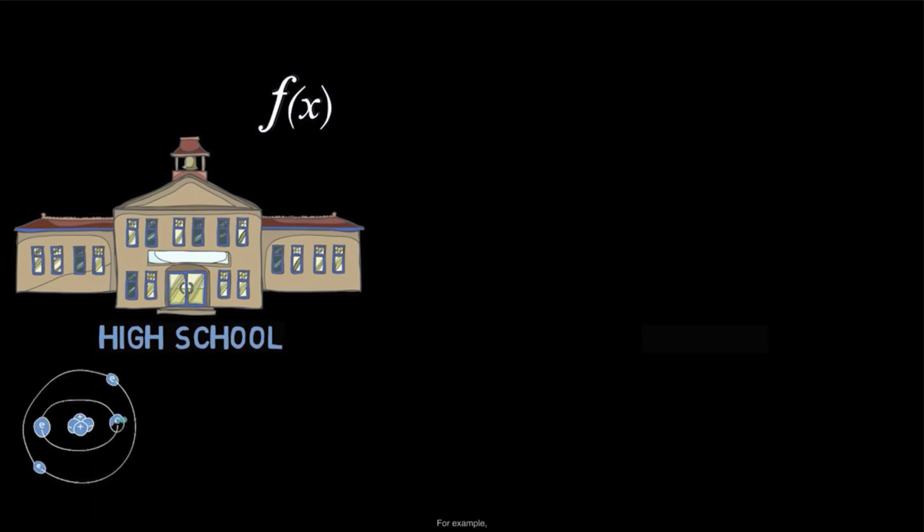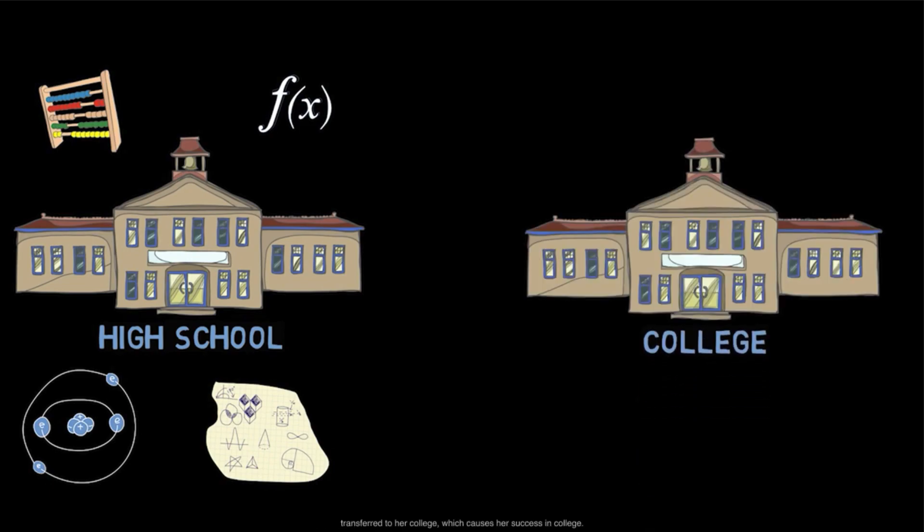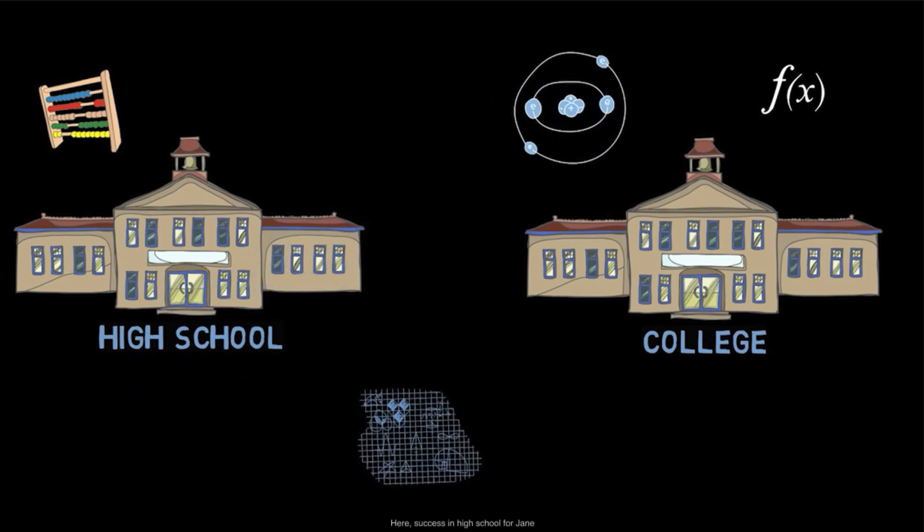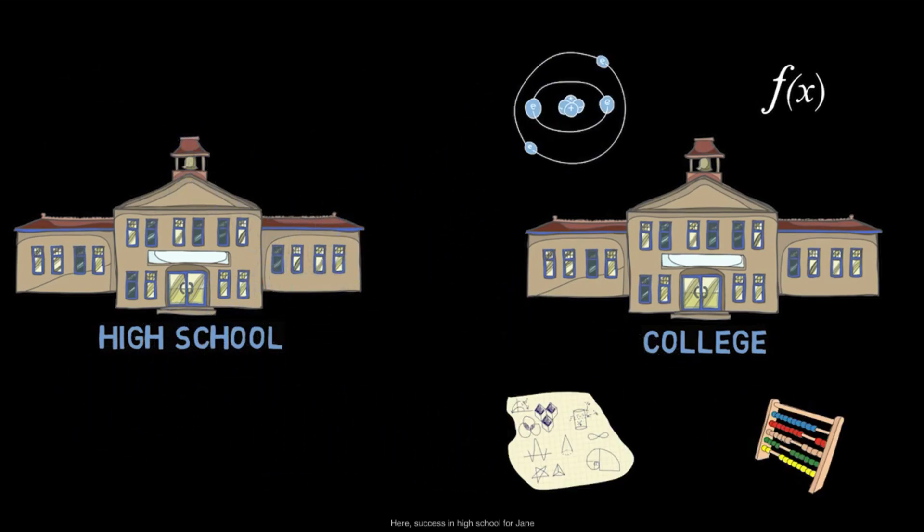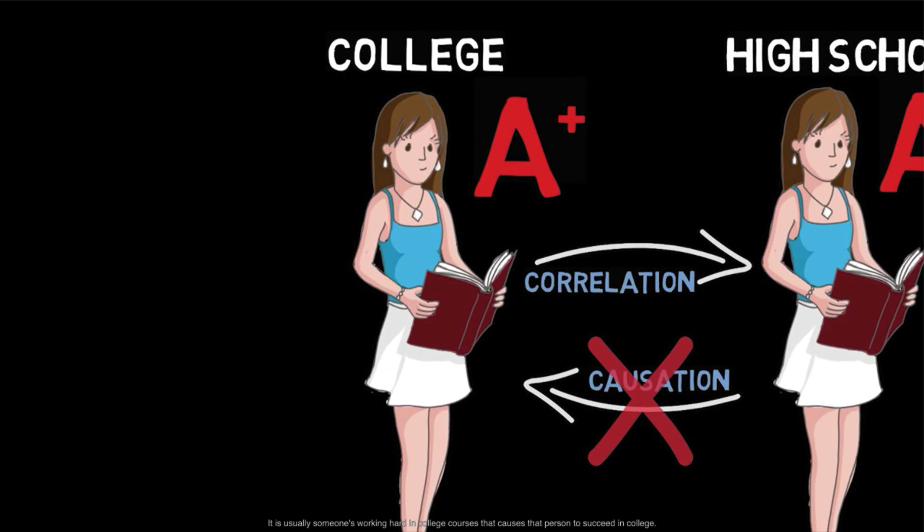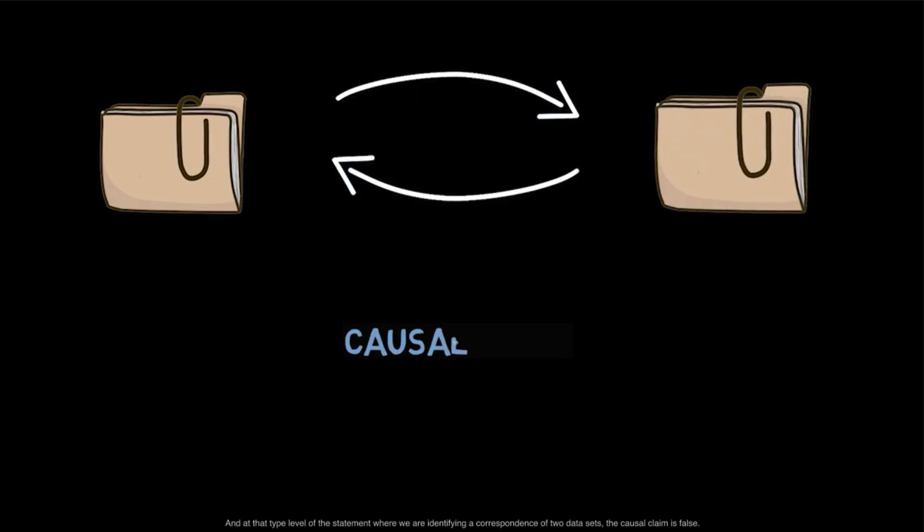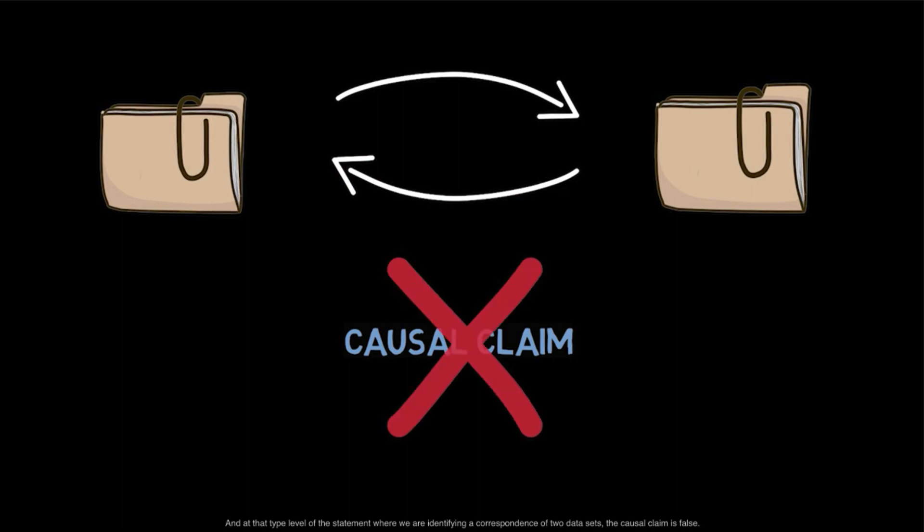Nonetheless, earning high grades in high school may sometimes cause a person to earn high grades in college. For example, Jane may have gotten good grades during high school, and some of those grades transferred to her college, which causes her success in college. Here, success in high school for Jane causes her success in college. But most of the time, it is not the success in high school that causes success in college. It is usually someone's working hard in college courses that causes that person to succeed in college. And at that type level of the statement, where we are identifying a correspondence of two data sets, the causal claim is false.